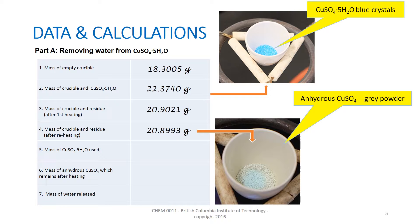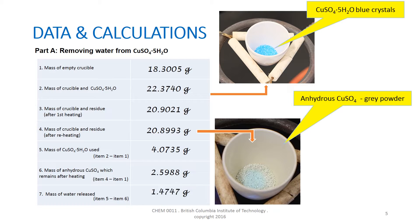Note that there is a slight difference in mass after the first and second heating, observable in the third decimal place. As a result, the mass from the second heating is used in calculations. To calculate the mass of copper sulfate pentahydrate used, line 1 is subtracted from line 2; line 5 shows this is 4.0735 grams. To calculate the mass of anhydrous copper sulfate, line 1 is subtracted from line 4; line 6 shows this is 2.5988 grams. The difference between these values is the mass of water released as a gas; line 7 shows this is 1.4747 grams.